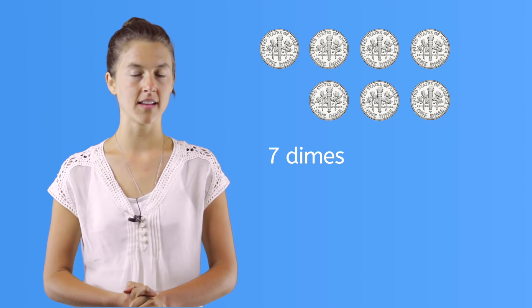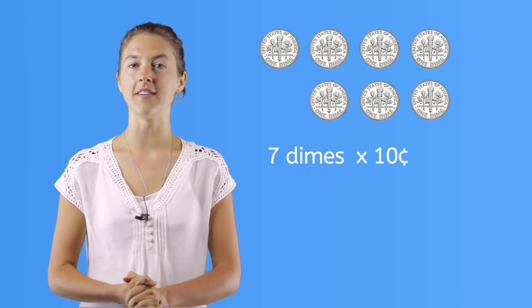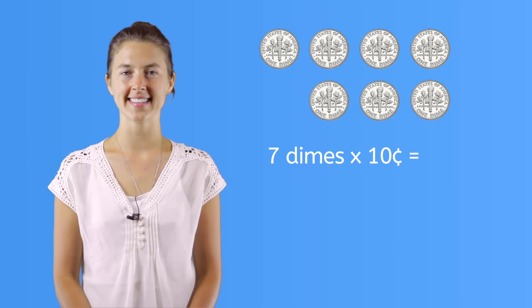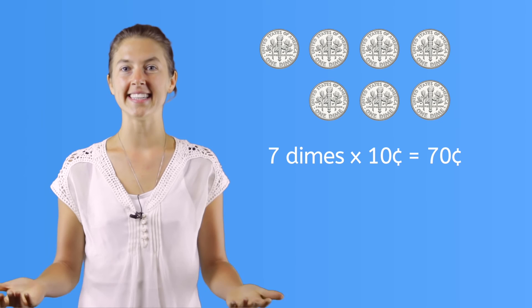Just like nickels, we need to count dimes differently from pennies, because dimes are worth 10 cents each. This time, we'll count by 10s! Let's count! 10, 20, 30, 40, 50, 60, 70. We have 70 cents! Let's try the shortcut by multiplying the number of dimes, 7, by the amount of a dime, 10. This gives us 70 cents! Yes!